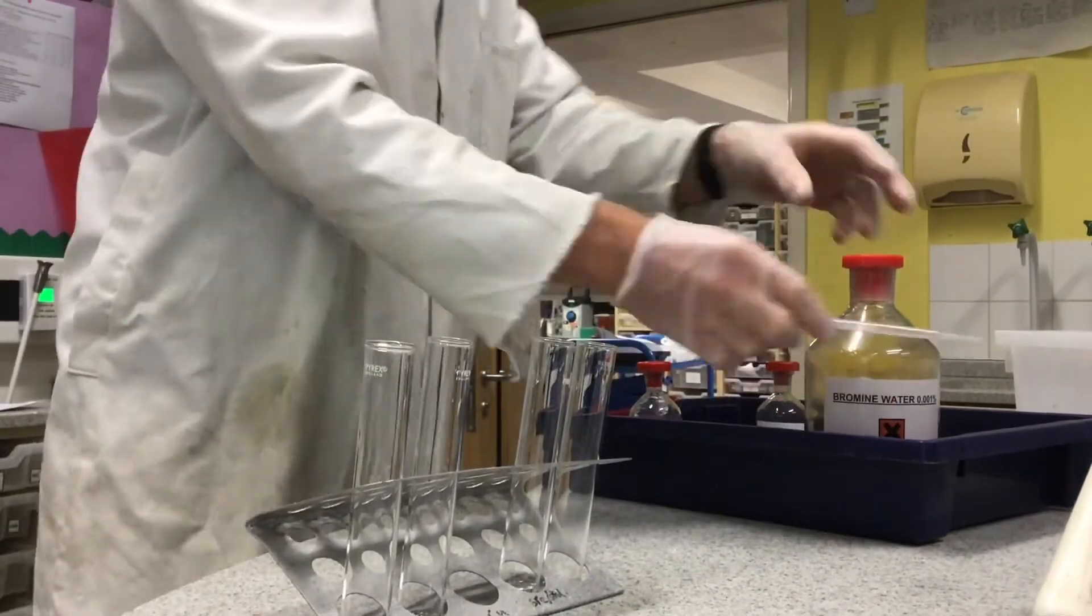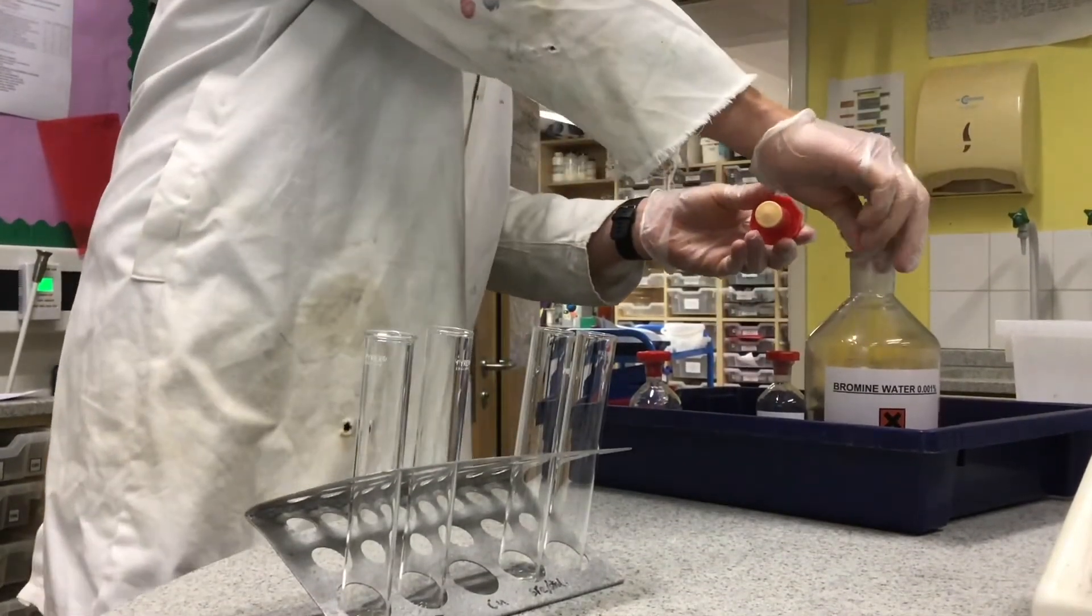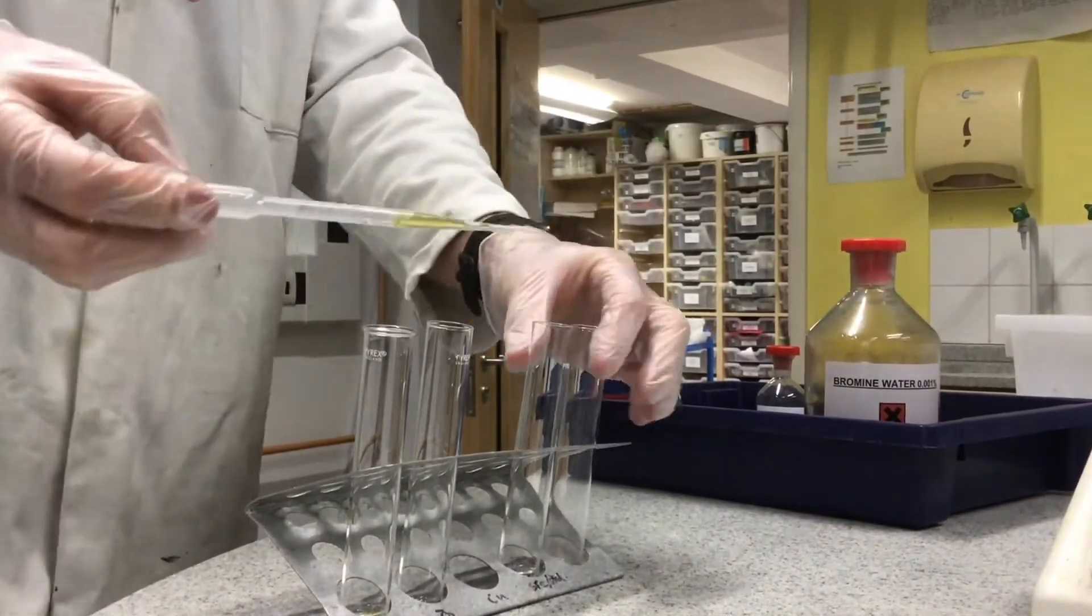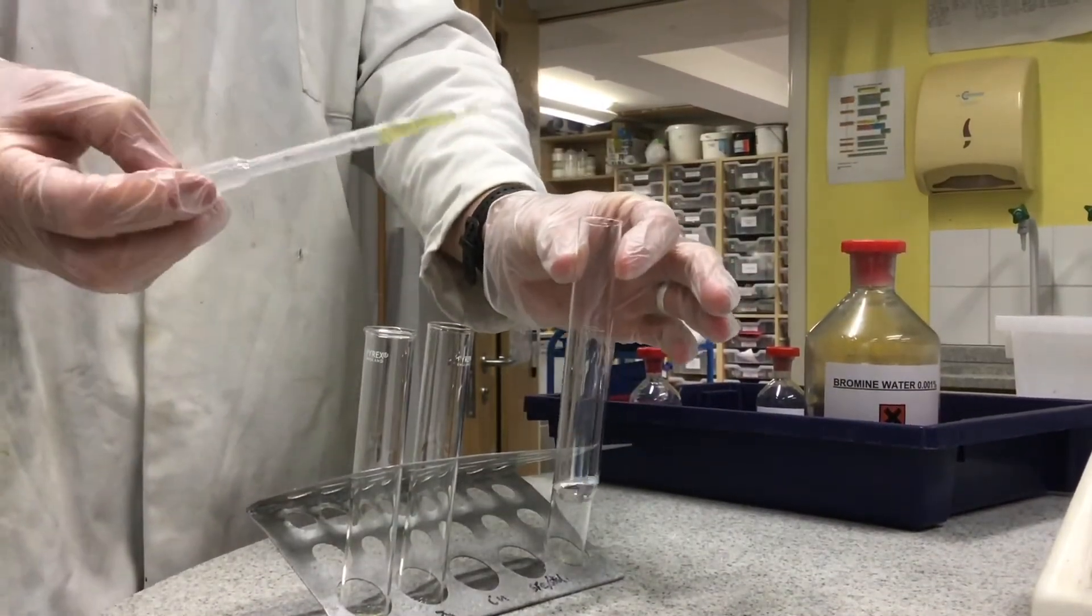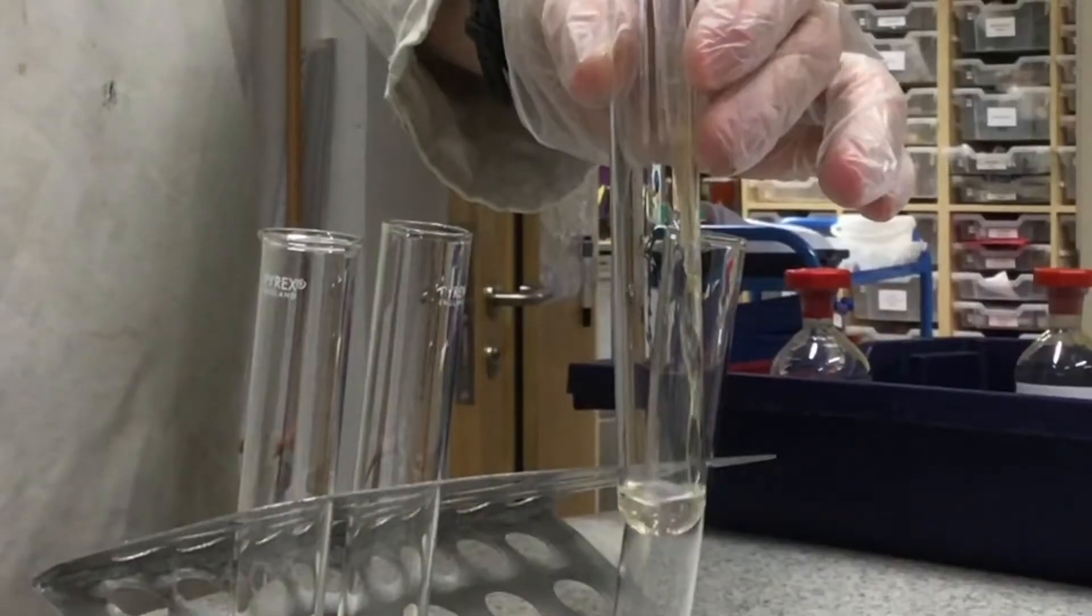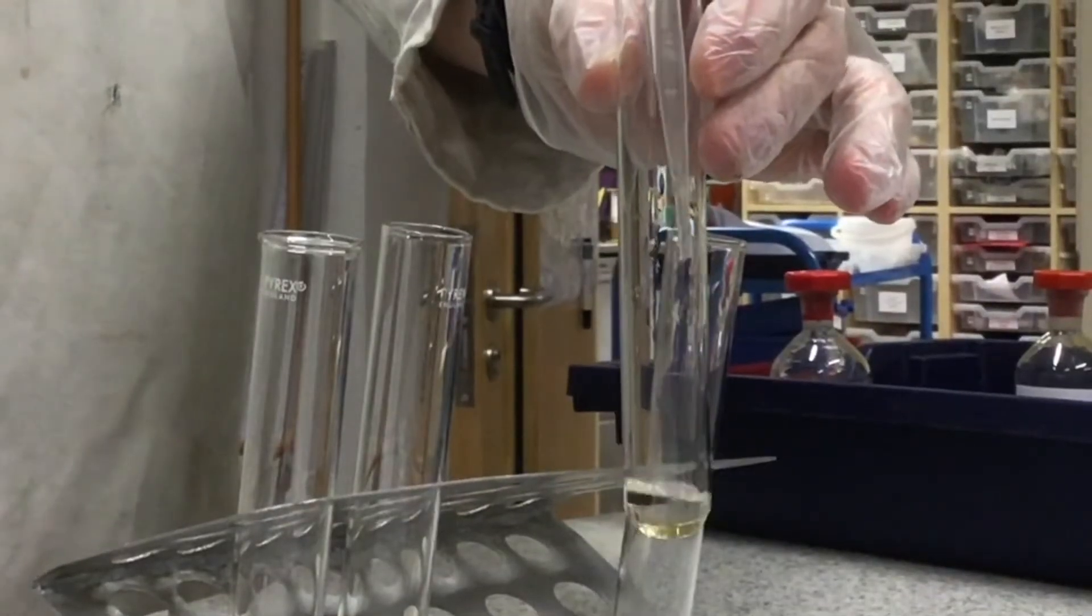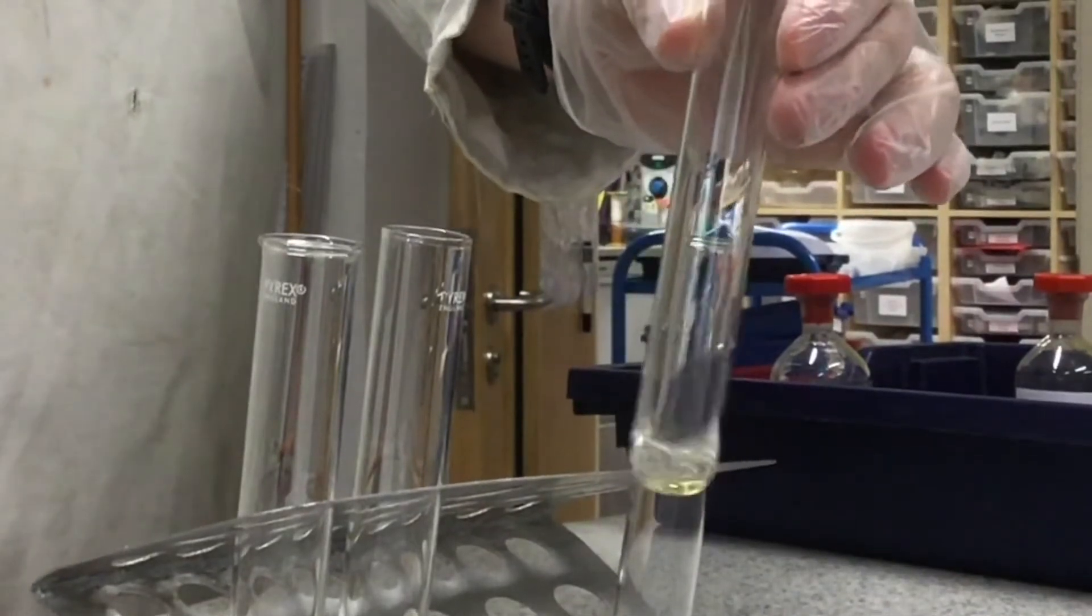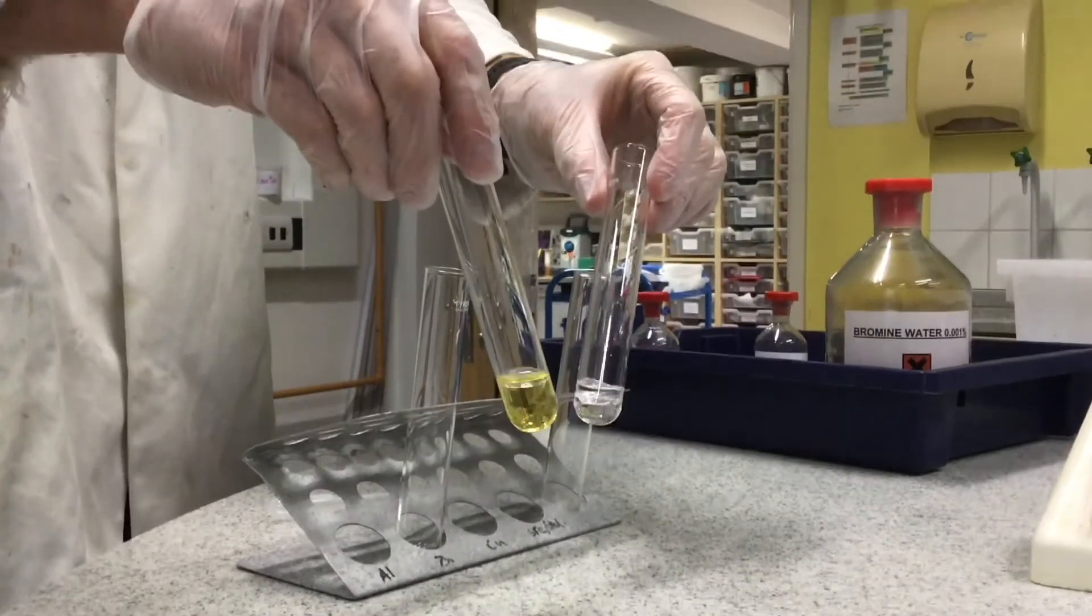So how you can identify an alkene is that when you add bromine water to an alkene there will be a color change. So you pour that in, drop, drop, drop, there is a chemical reaction occurring and therefore the solution goes colorless.